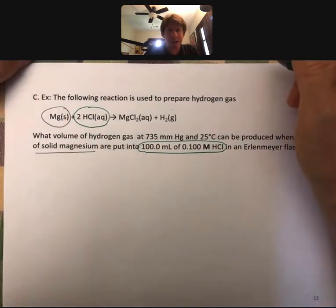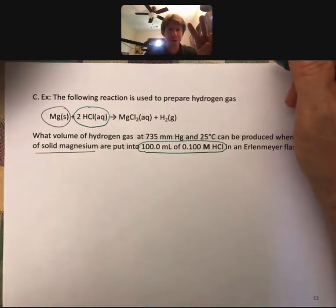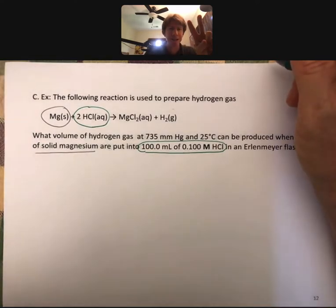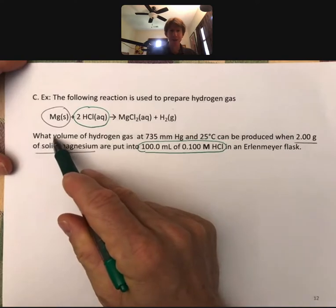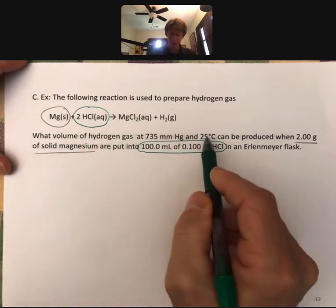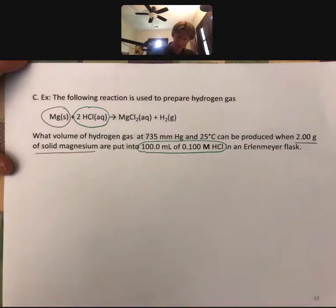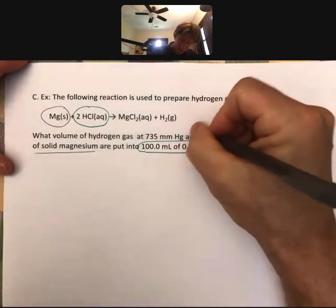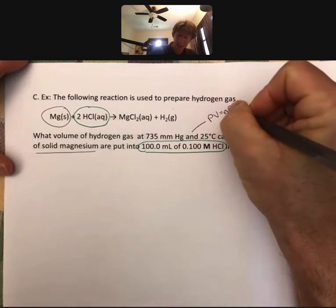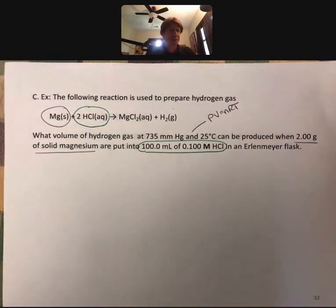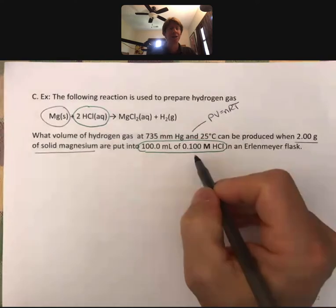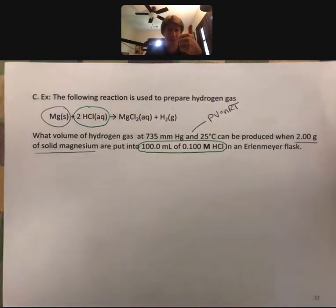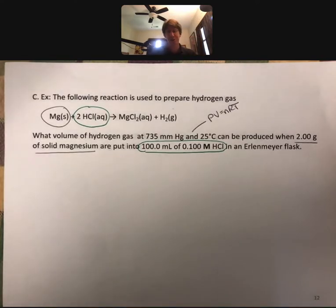Whenever we have enough information to find the moles of two different reactants, that means it is a limiting reactant problem, which we've worked on. Then the question actually asks what volume of hydrogen gas at a particular pressure and temperature, and that calls to mind that we will probably be doing a PV equals nRT again. So the new thing here is the milliliters and molarity to get moles, and the old things are doing a limiting reactant problem, using grams to moles, and using the ideal gas law with moles.